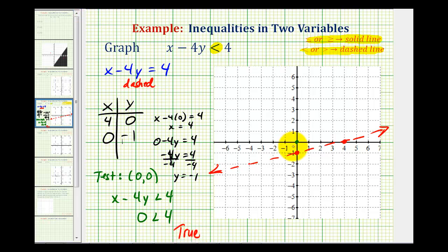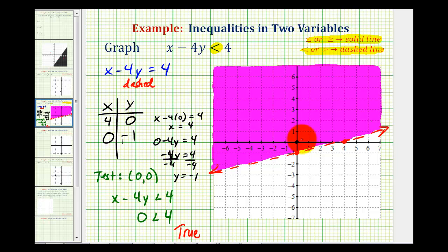Which means we're on the side of the line that we need to shade. So this half plane above the line contains all the points with the ordered pairs that would satisfy the given inequality. So this would be the graph of our inequality. I hope this was helpful.